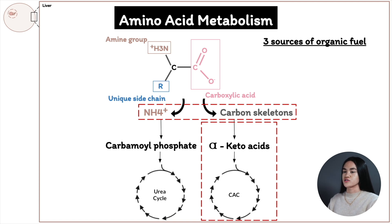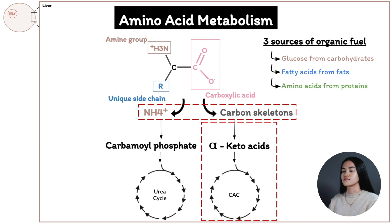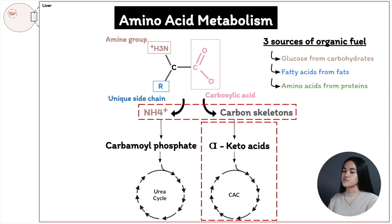We have three sources of organic fuels: glucose from carbohydrates, fatty acids from fats, and amino acids from proteins. When we talked about glucose oxidation, the objective was energy production, and this is one of the main reasons why we need protein — it's a source of energy. However, amino acids can't be stored, so we need to supply amino acids for protein synthesis. And we can't actually synthesize all of the amino acids ourselves.